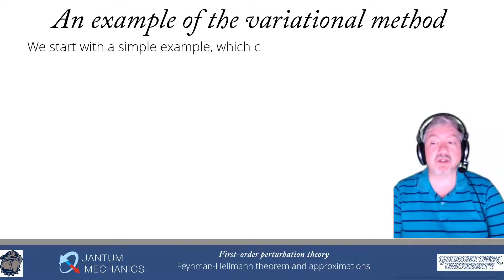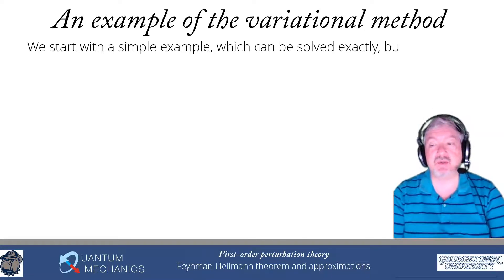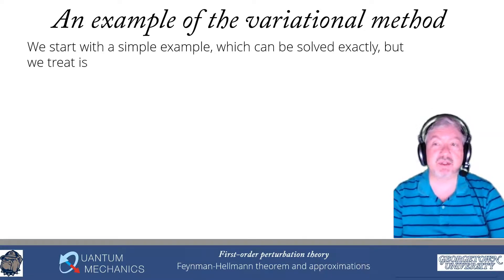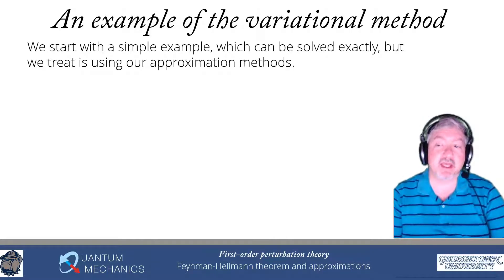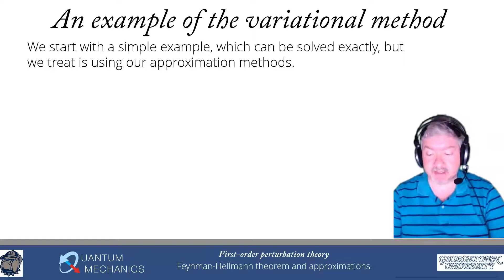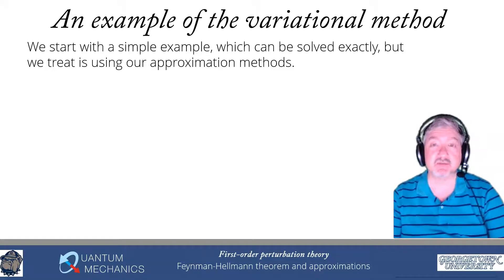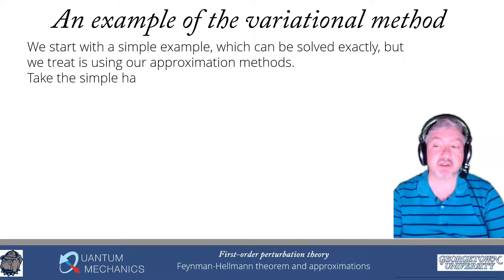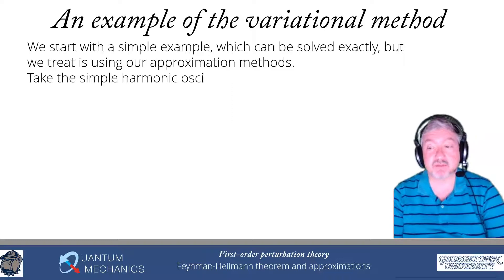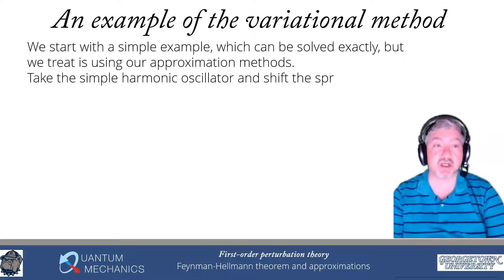I'm going to start by showing you how you can think about things using the variational method. We're going to solve a problem that we can solve exactly, but treat it as if we couldn't, and see how we solve it approximately using these different approximation methods. Because we can solve it exactly, we have a nice check.